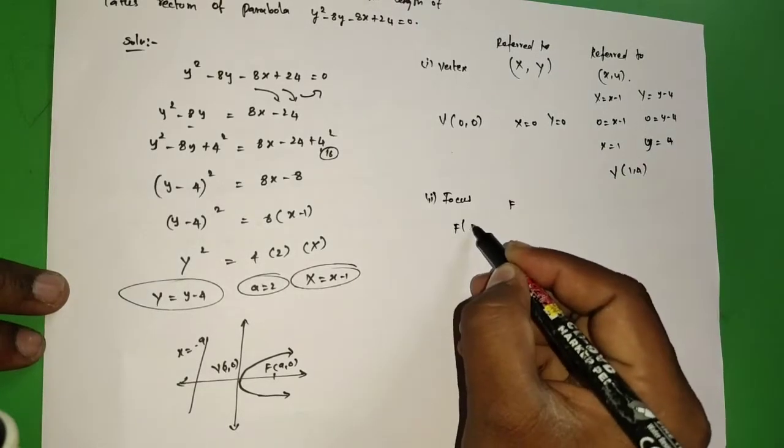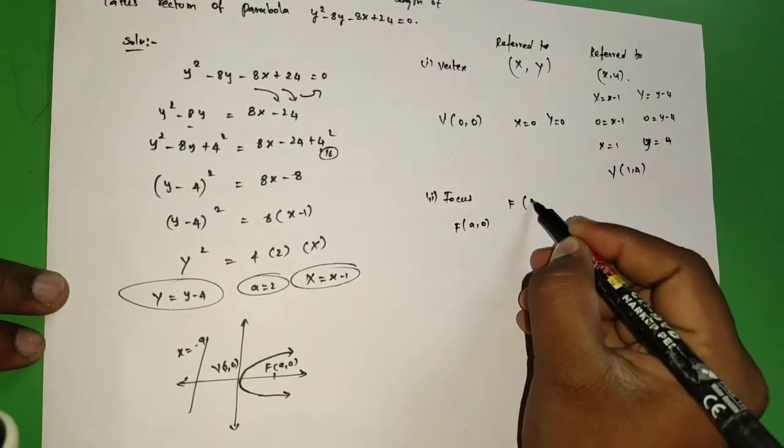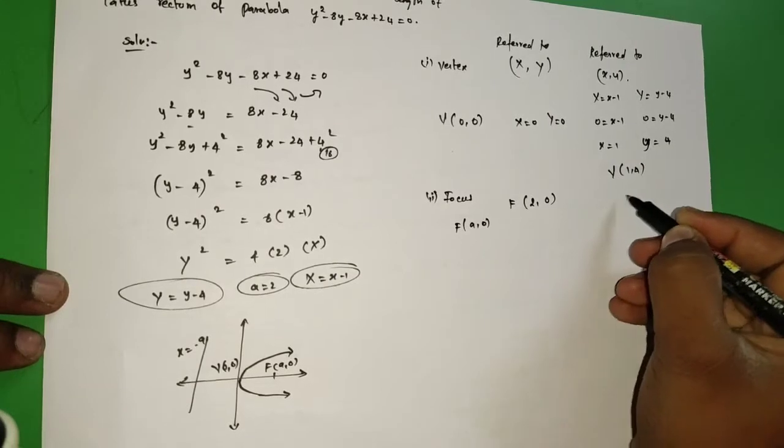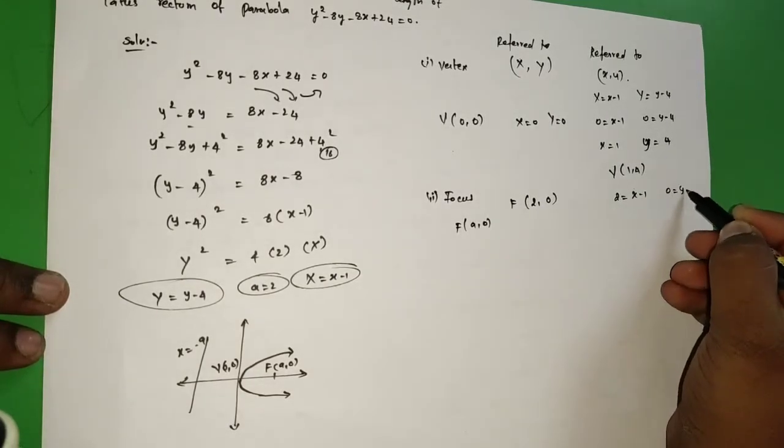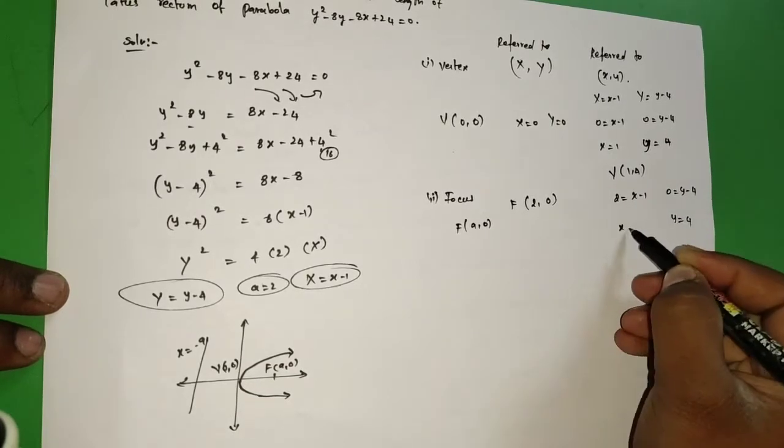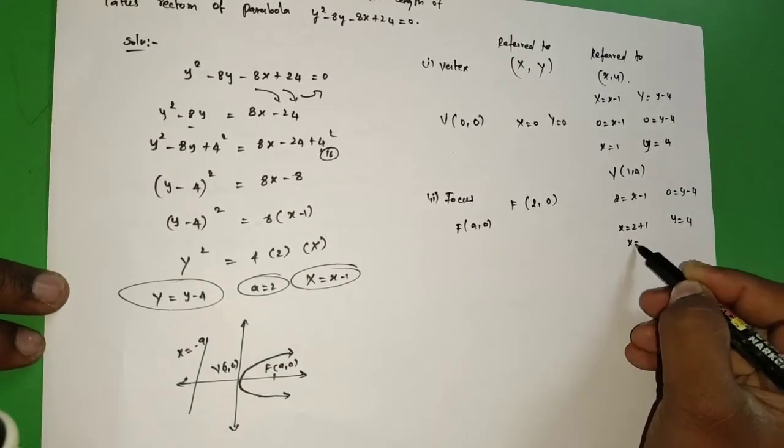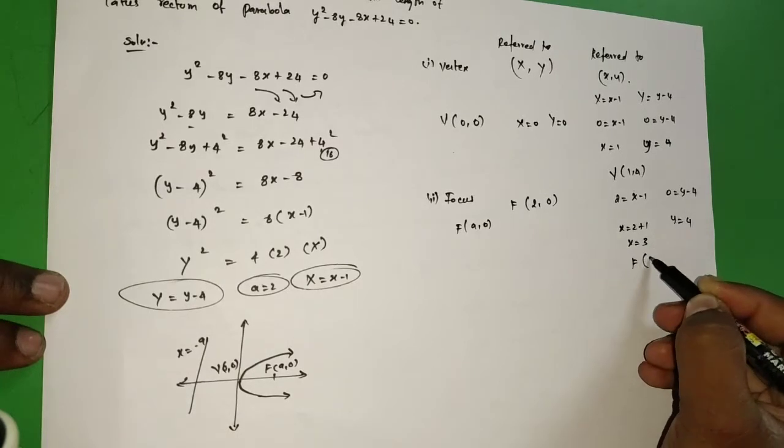Focus, that is F(a, 0). The value of a is 2, so (2, 0). Here X = 2, so 2 = x - 1 and 0 = y - 4. Solving, x = 3, y = 4. Then focus is (3, 4).